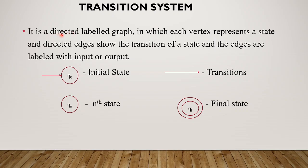A transition system is a directed labeled graph in which each vertex represents a state. The directed edges show the transition from one state to another, and the edges are labeled with input symbols.